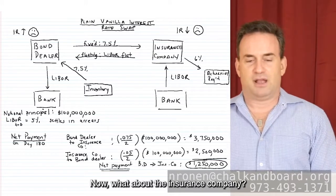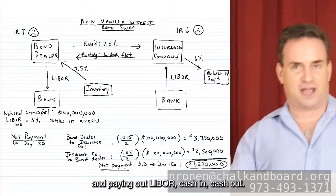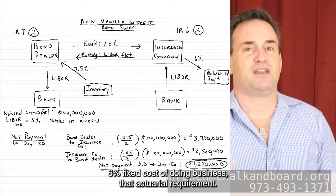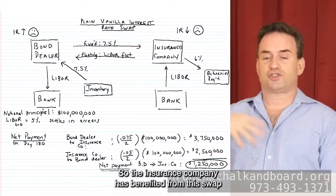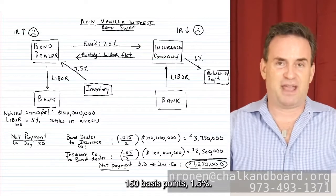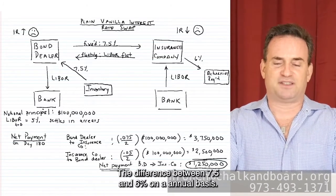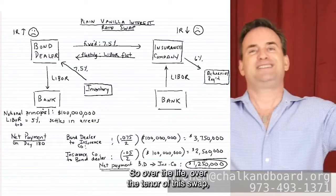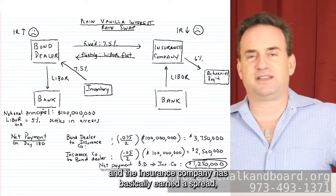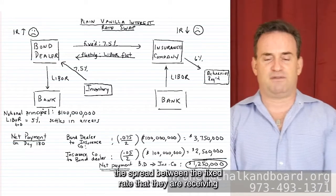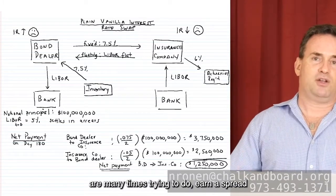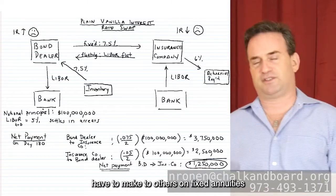What about the insurance company? They're receiving LIBOR from the bank and paying LIBOR out — cash in, cash out. But then they're receiving 7.5% from the bond dealer, which covers their 6% fixed cost of doing business — the actuarial requirement. So the insurance company has benefited from this swap because they've locked in a spread of 150 basis points — 1.5% — the difference between 7.5% and 6% on an annual basis. Over the tenor of this swap, the insurance company has basically earned that spread.